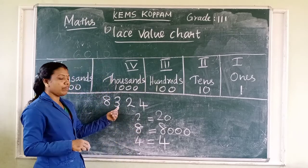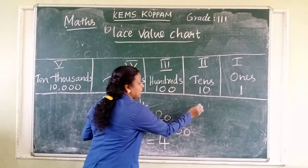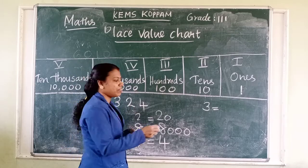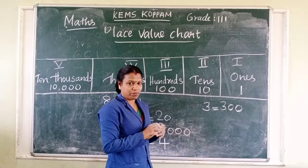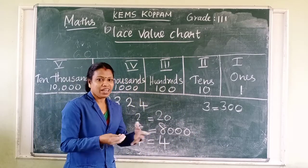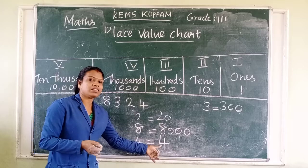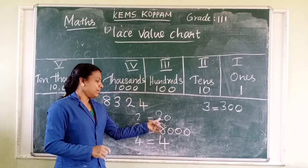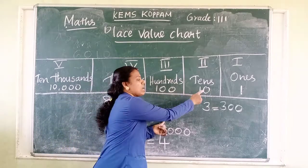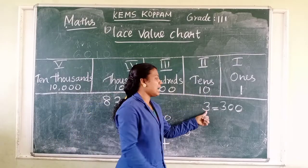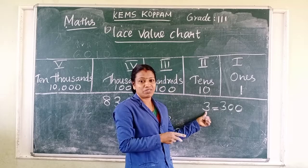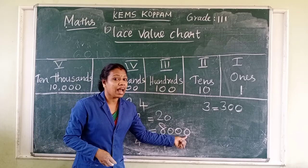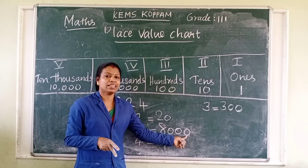The place value of three — three is in the hundreds place, so its place value is three hundred. An easy way to get the place value: if in the ones place, the number itself is the value. If in the tens place, add one zero. If in the hundreds place, add two zeros. If in the thousands place, add three zeros. Then you will get the place value.